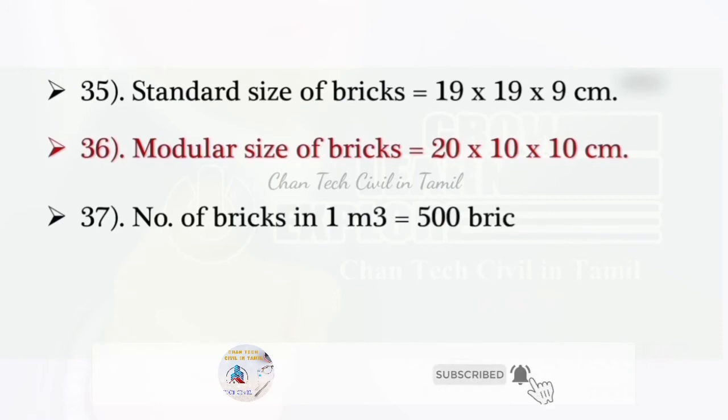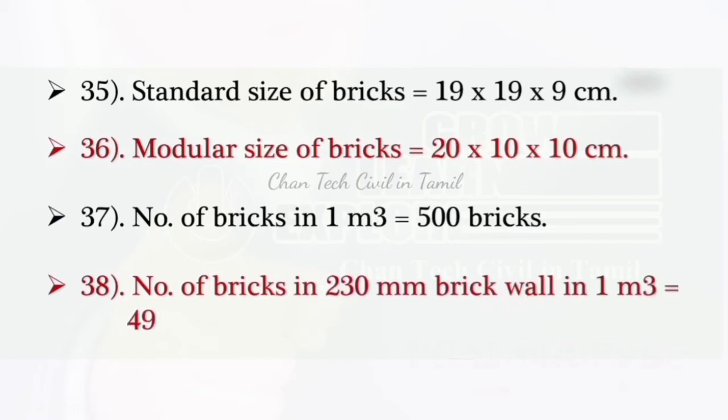Number of bricks in 1 m³ is 500. Number of bricks in 235 brick wall, 1 m³ is 496 bricks.